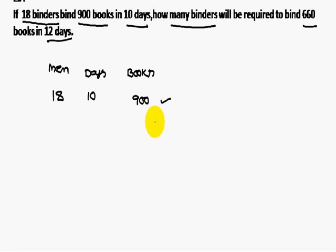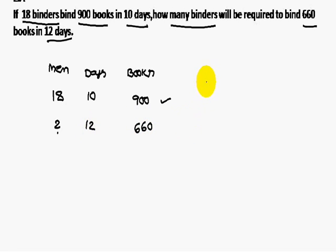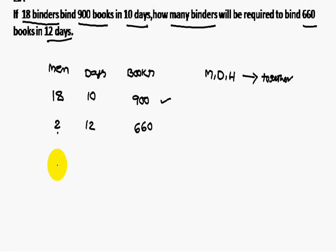The first statement is complete. For the second statement: the question mark is the number of binders required to bind 660 books in 12 days. Remember: men, days, and hours should be together for each statement. The question asks how many men are required.